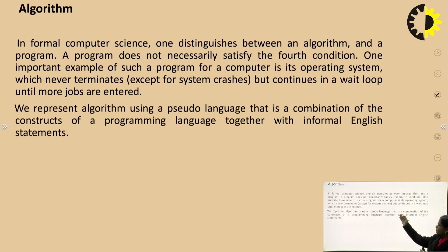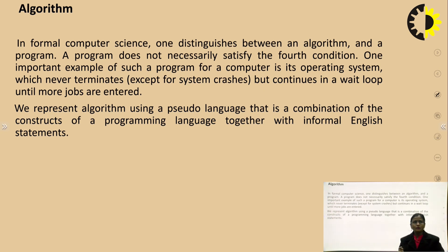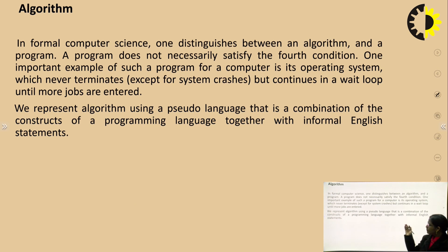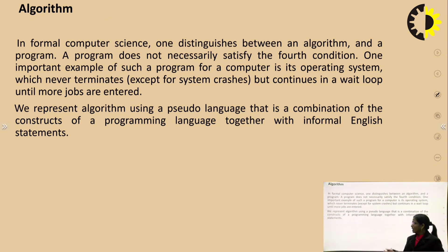One important example is the computer's operating system, which never terminates — except for a system crash. It continues in a wait loop until more jobs are entered. So this is the difference between an algorithm and a program.